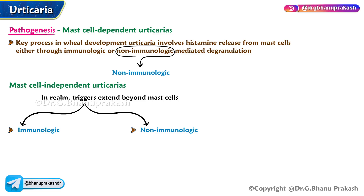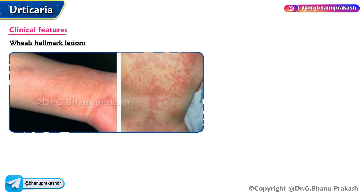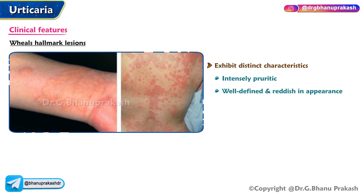Immunologic mast cell-independent urticaria is triggered by responses involving complement and kinin systems. Non-immunologic examples include contact urticaria and urticaria induced by angiotensin-converting enzyme inhibitors. Clinical features: wheals are the hallmark lesions — intensely pruritic, well-defined, and reddish in appearance, typically transient evanescent swellings that usually subside within 24 hours.